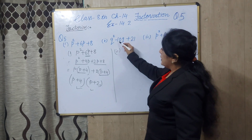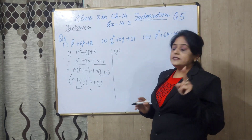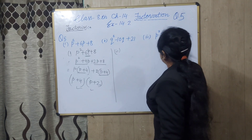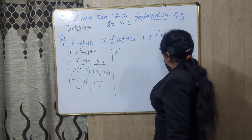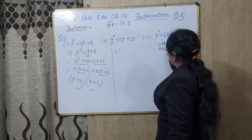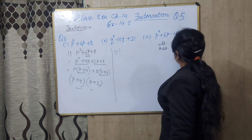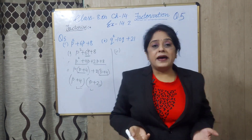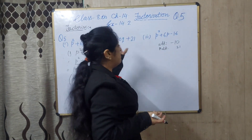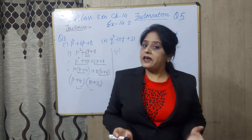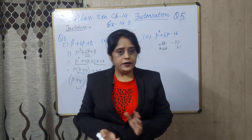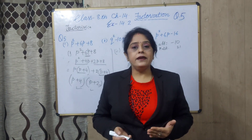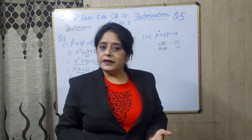Now second part. Think of two numbers which when added give minus 10, and when multiplied give 21. Have you thought? Minus 7 and minus 3. If you add them you get minus 10, and minus 7 multiplied by minus 3 — minus times minus gives positive — gives 21.